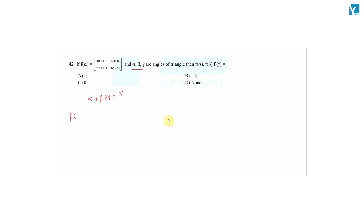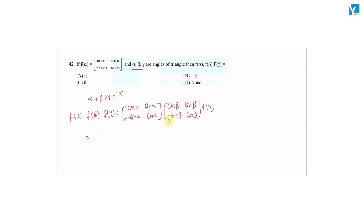So, f(α) · f(β) · f(γ) — let's write it out. f(α) is [cos α, sin α; -sin α, cos α], multiplied by f(β) which is [cos β, sin β; -sin β, cos β], then multiplied by f(γ). Let's multiply the first two matrices together.